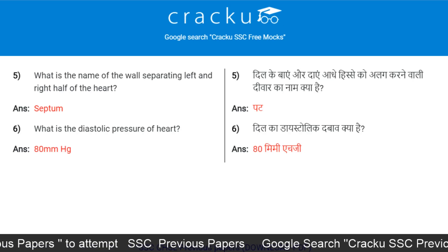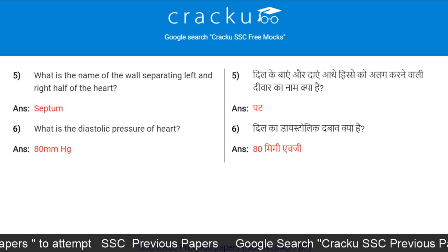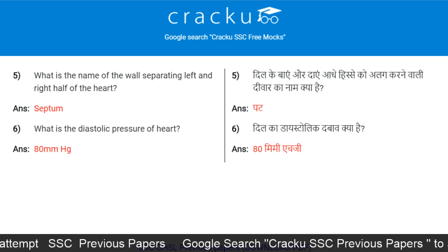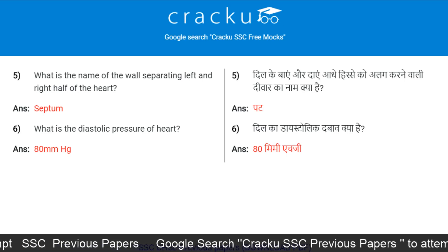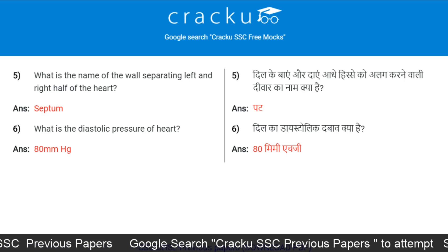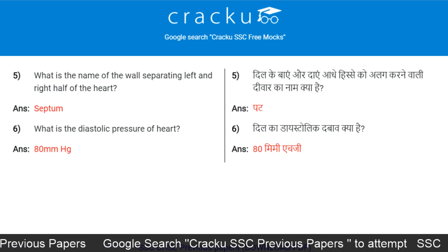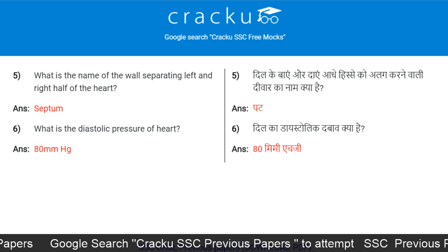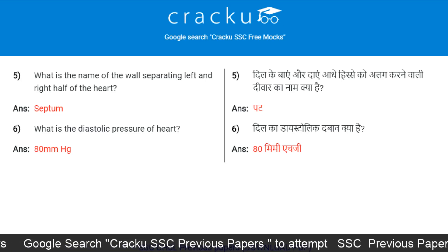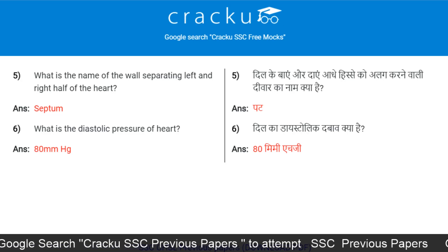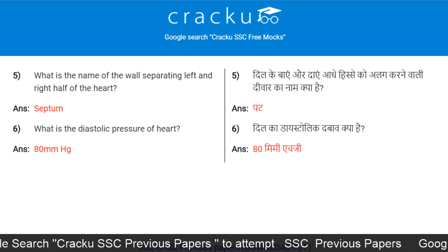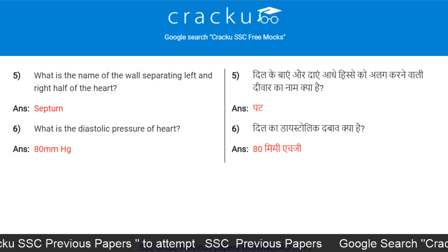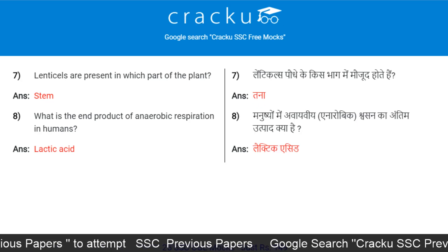What is the name of the valve separating the left and right half of the heart? Septum. What is the diastolic pressure of the heart? 80 mmHg.